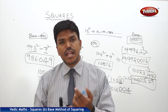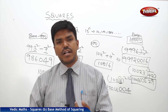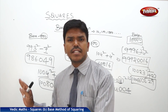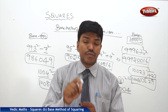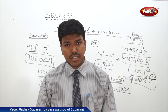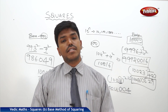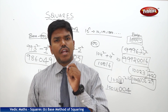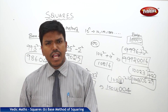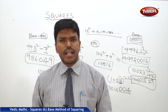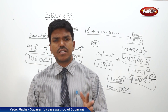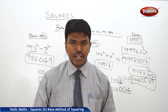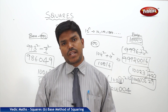Like this, we can easily calculate squares of numbers which are near to the base — whether it is base 10, 100, 1000, or 10,000. Now let us see one more type of technique for squares, in which we can calculate the square of any number — whether it is 3-digit, 4-digit, or 5-digit — within a single line. That technique is called the duplex method of squaring.